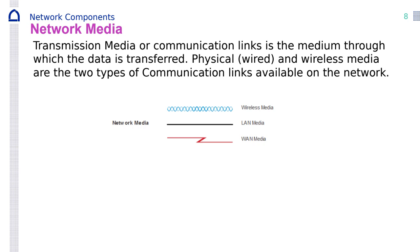Network media can be wireless LAN or WAN media. WAN — for example, enterprise companies communicate their network with other networks through WAN. Like if you are a bank with a branch, you want a private WAN connection between your branch and main office.